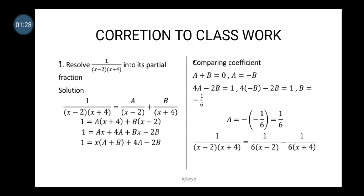This question asks us to resolve 1 over (x minus 2)(x plus 4) into its partial fraction. It will therefore become A over one linear factor, which is (x minus 2), plus B over the other linear factor, which is (x plus 4).